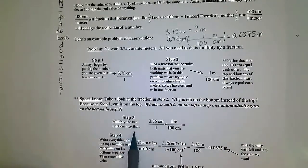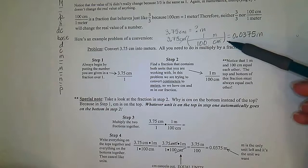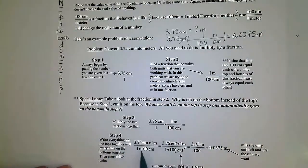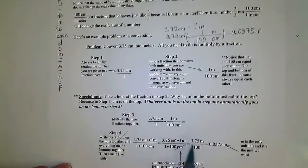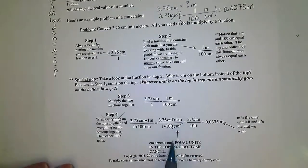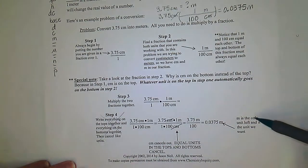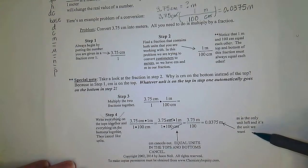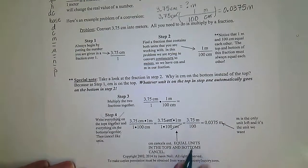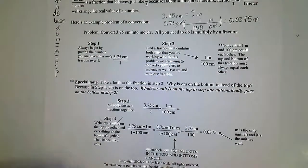Step three: multiply the two fractions together. Step four — I don't think this is necessary, but if you need to, write everything on the tops together and everything on the bottoms together, then cancel like units. Meters is the only unit left and it's the unit we want. Centimeters cancel out. Equal units in the tops and bottoms cancel.